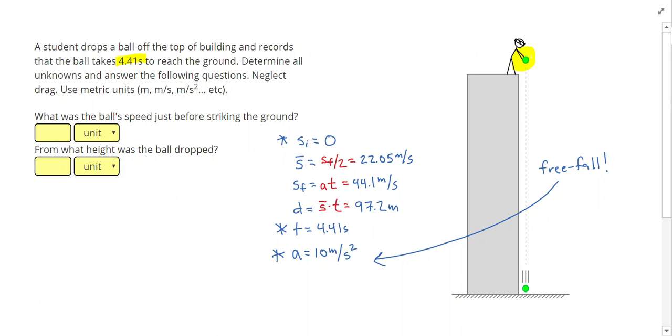Alright, so the problem asked me, what was the ball's speed before striking the ground? That's going to be my final speed of 44.1 meters per second. From what height was the ball dropped? Height is distance, so that's going to be the distance of 97.2 meters.